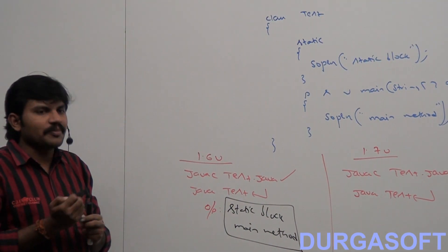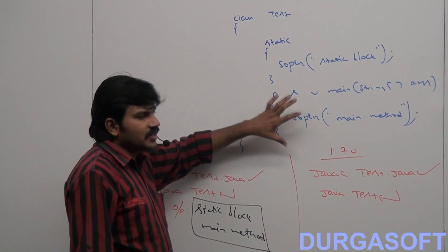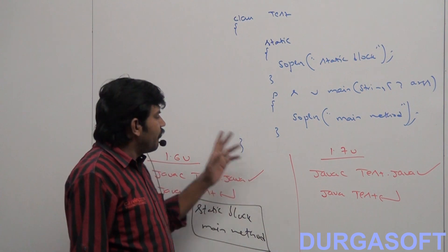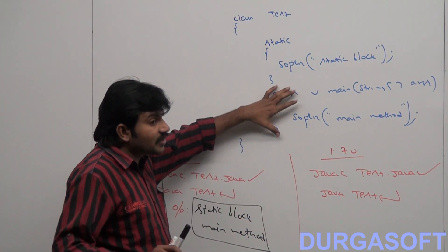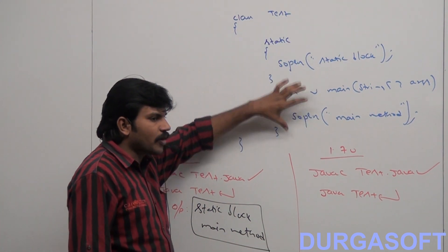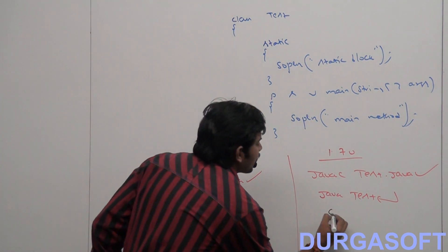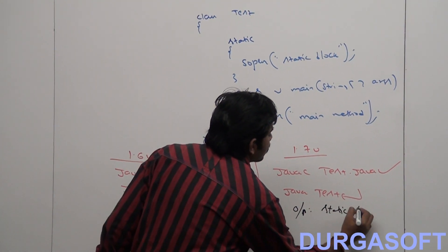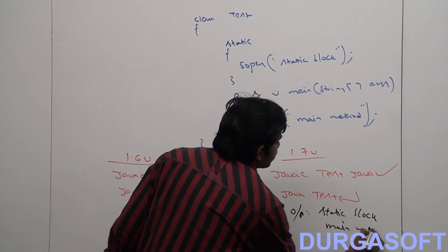The correct answer: static block followed by main method. JVM simply checks whether main method is there or not. If the class contains main method — whether it is 1.6 or 1.7 version — there is no difference in the sequence. Execution is always static block followed by main method.